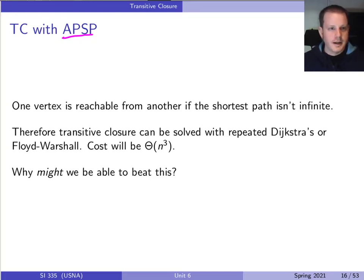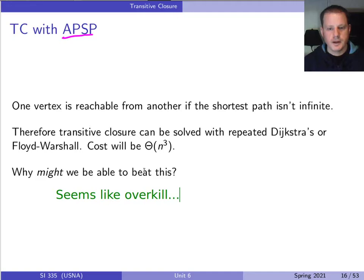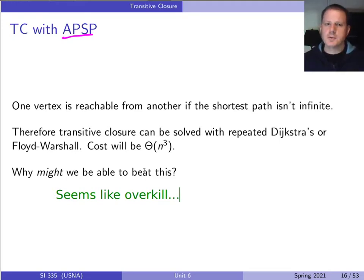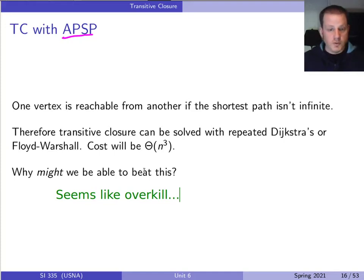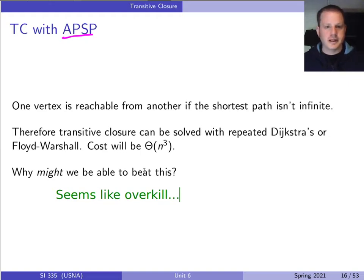But this seems like overkill. For transitive closure we only care about reachability, not the actual best path. It's like the difference between running Dijkstra's algorithm, which finds shortest paths, versus a depth-first search, which just tells you whether you can get there. DFS finds the destination without necessarily finding the most efficient path, and if that's all you care about, DFS has a better running time and uses a simple stack rather than a priority queue.